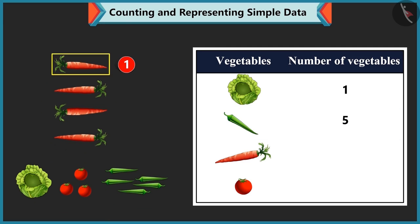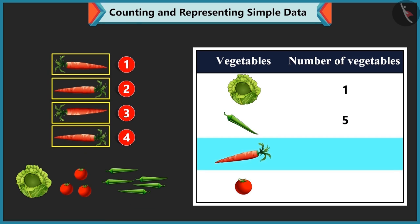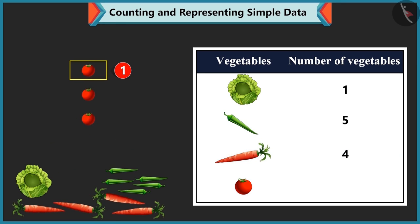Carrots are 1, 2, 3 and 4 over here. So, we write 4 against carrot. Tomatoes are 1, 2 and 3 over here. So, we write 3 against tomato.